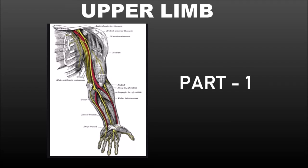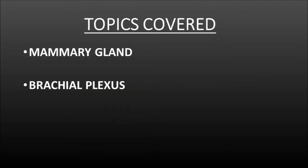Hi, this is from DocsUpgrade. As we mentioned in our last video, we are going to start this lecture with upper limb. Initially in upper limb, we are going to start with essays and then go on with short notes. There are totally four essays which are the most important and most frequently asked ones. In this lecture, we will be discussing in detail about mammary gland and brachial plexus.